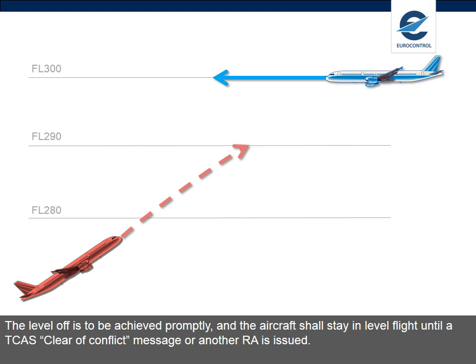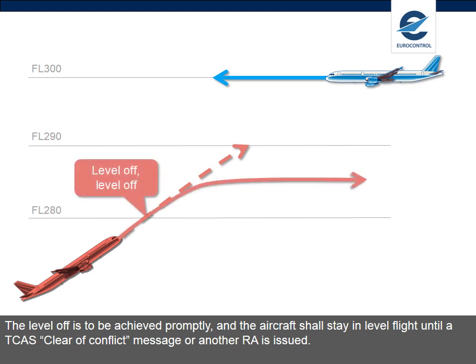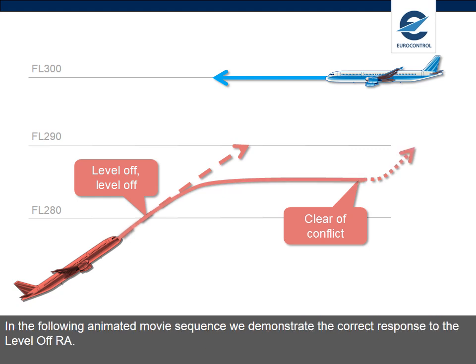The Level Off is to be achieved promptly, and the aircraft shall stay in level flight until a TCAS Clear of Conflict message or another RA is issued. In the following animated movie sequence, we demonstrate the correct response to the Level Off RA.